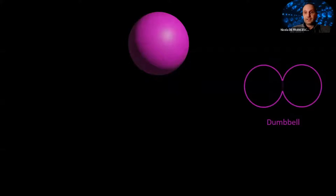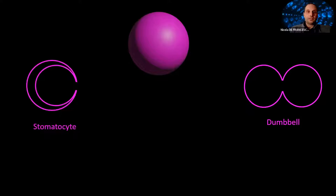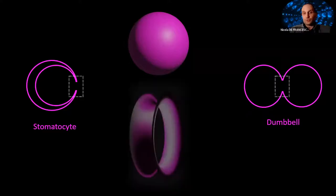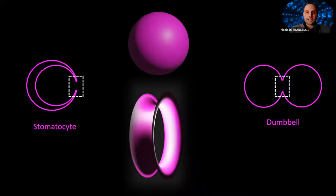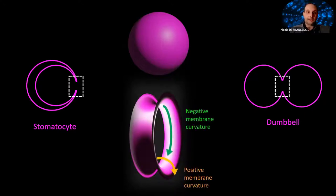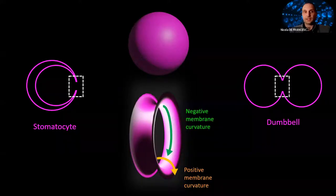We can also build complex geometries using spheres in two flavors. Spheres can be added, so to speak, giving what is known as a dumbbell. Or they can be subtracted, giving a shape known as a stomatocyte. Both geometries share one key structural element — the neck — which has a toroidal, or catenoid-like shape. It is a very complex geometry that has both positive and negative membrane curvature, depending on which direction you're looking at.